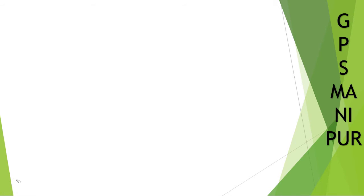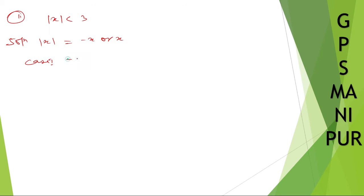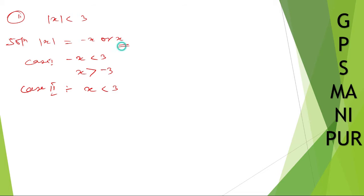Let me change the color of my pen to red. Roman number 2: the question is mod of x is less than 3. So we can write mod of x as minus x or x. Case 1 is minus x is less than 3, so x is greater than minus 3. And case 2: x is less than 3. I hope you can understand. So this is one condition and this is the second condition.